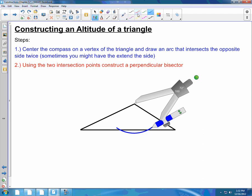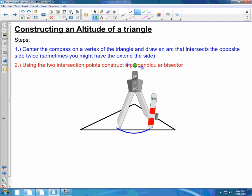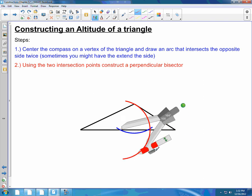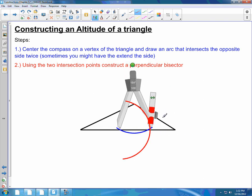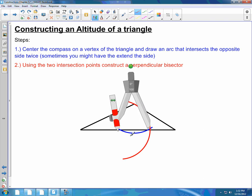Step two: using the two intersection points, construct a perpendicular bisector. You can see I don't need to change the opening of my compass, it's already over half, so I can draw an arc above and below, and repeat that process on the other side or other intersection point. Again, draw an arc above and below.